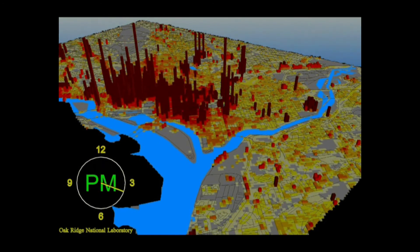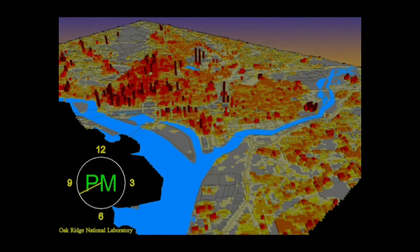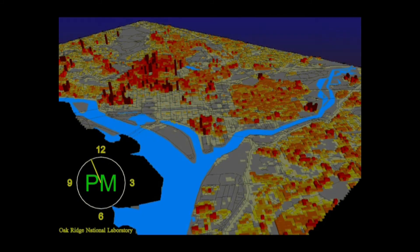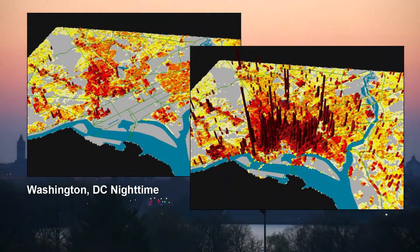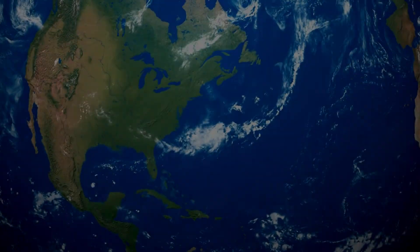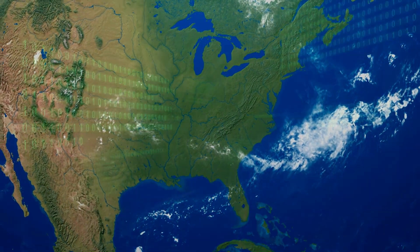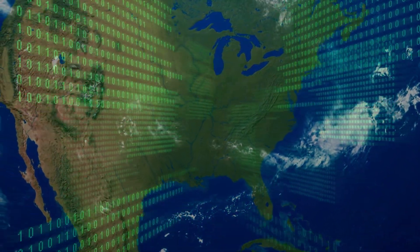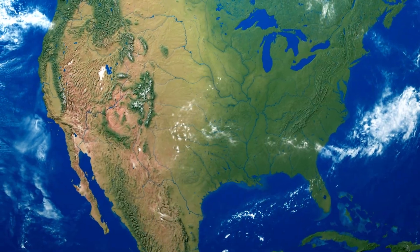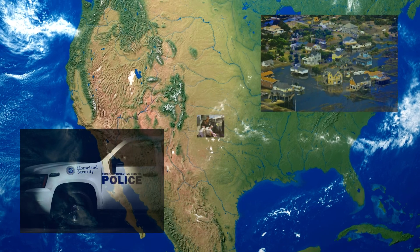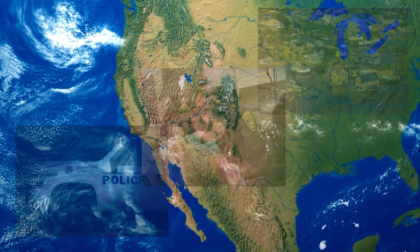As a result, LandScan USA is the first ever time-variant population distribution database. At 90 meters resolution, LandScan USA describes a nighttime residential population as well as daytime population distribution. Both LandScan USA and LandScan Global are updated every year and have emerged as the community standard for estimating at-risk populations in applications such as human security, disaster relief, and emergency preparedness and response.